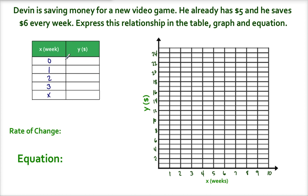So let's start with the table, because the table is always the best thing to start with. So I put 0 on here, because before the weeks even start passing, he already has $5. So at week 0, he has $5. Okay, after one week has passed, how much money does he have? Well, he has $6, because one week has passed, plus the $5 that he already had.